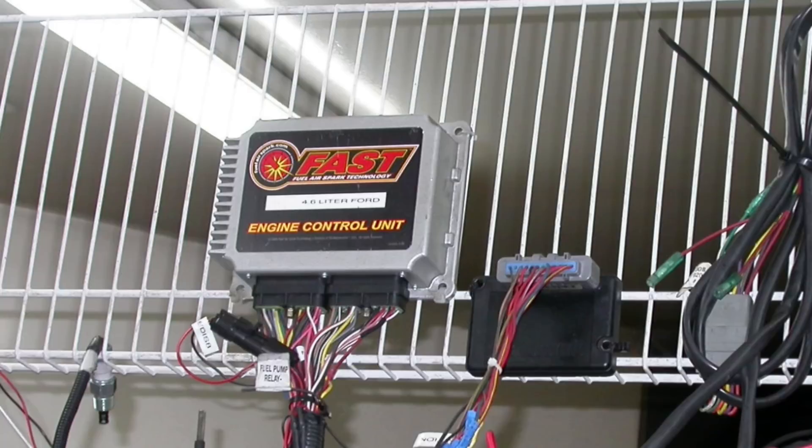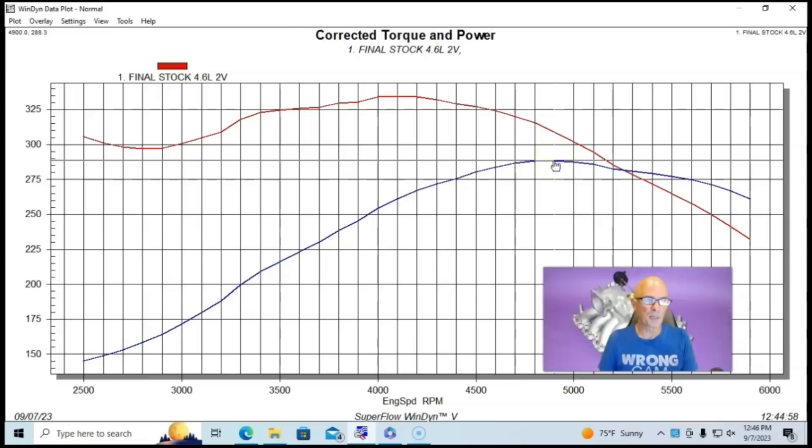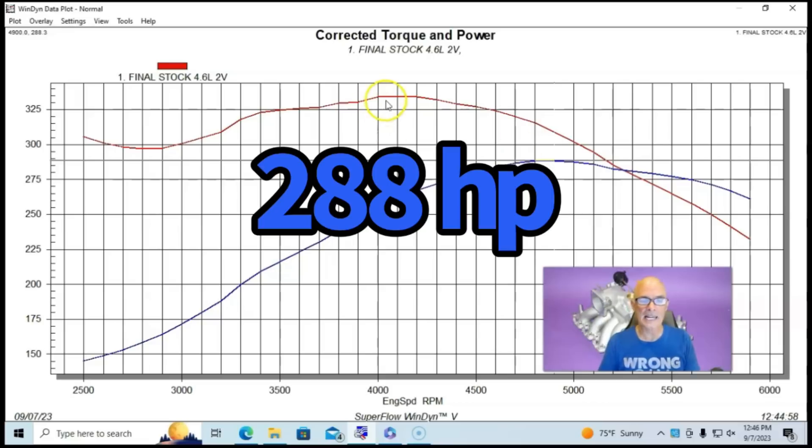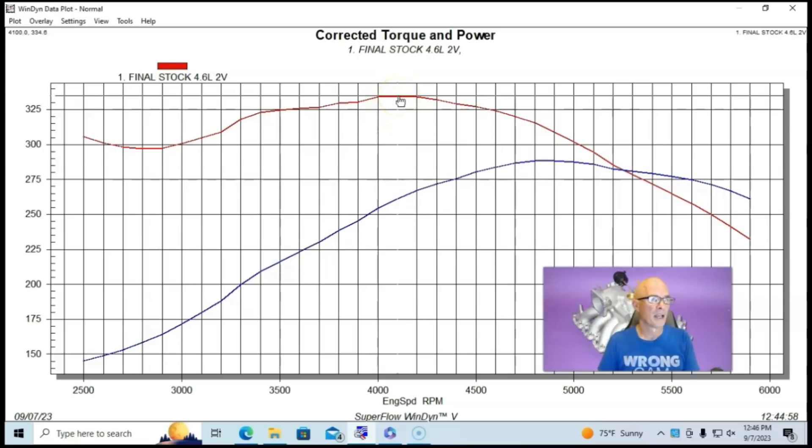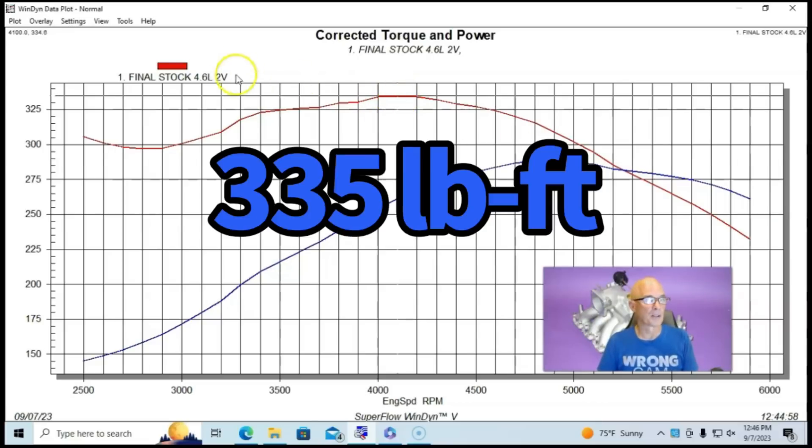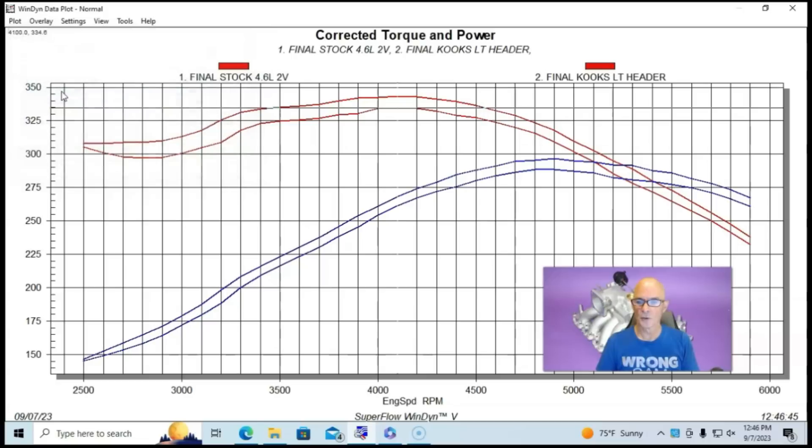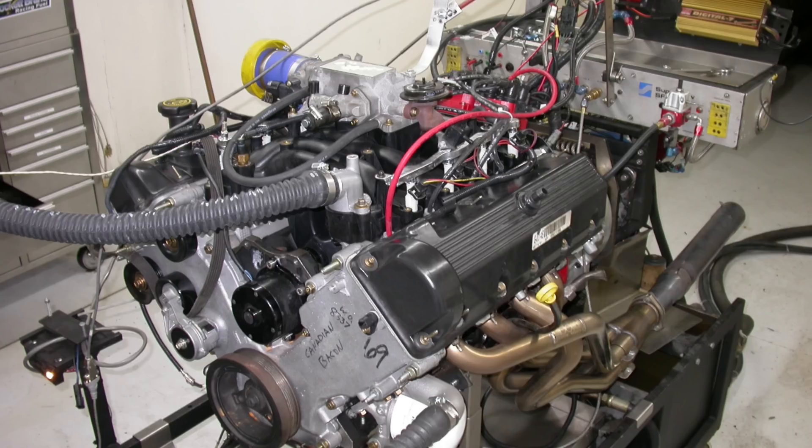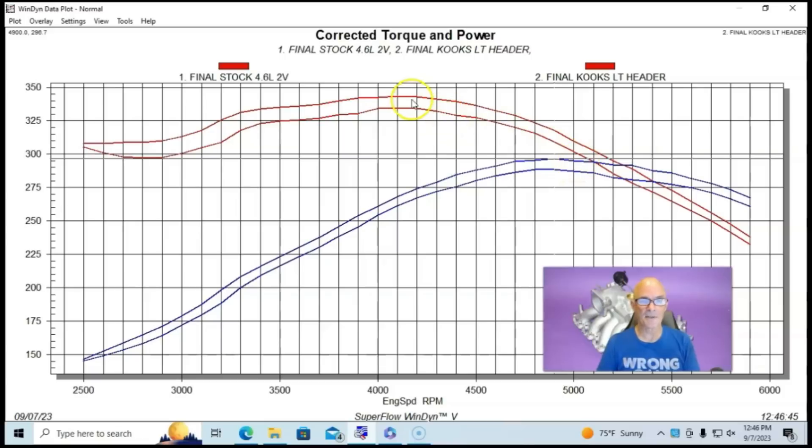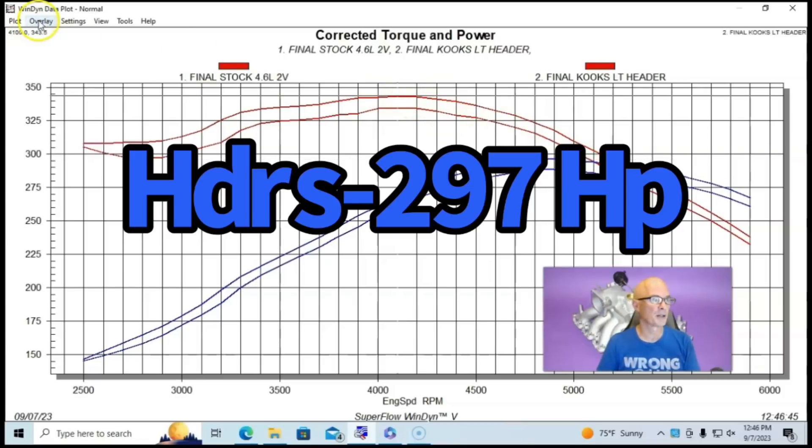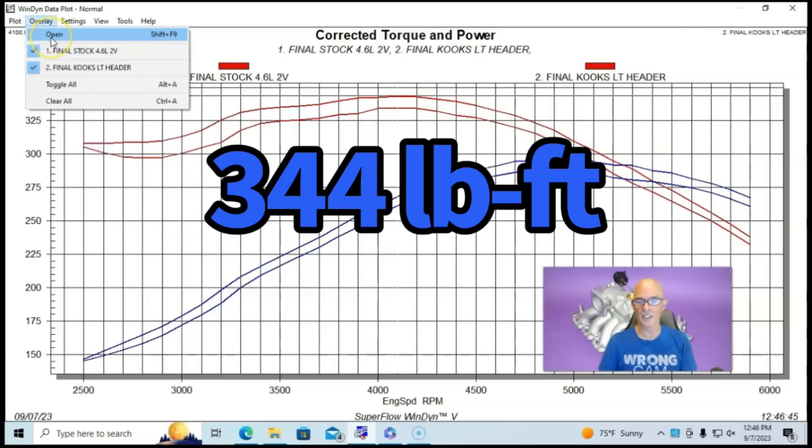We ran this with a Fast XFI management system back in the day. So this thing produced with stock exhaust manifold and with shorty headers, because they both made identical power when we tested it, 288 horsepower and 335 foot pounds of torque. Here's what happened with long tube headers. These were Kooks, 297 horsepower. Peak torque was up to 344 foot pounds. You can see the headers.